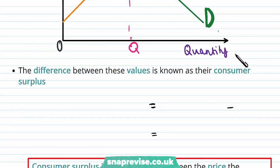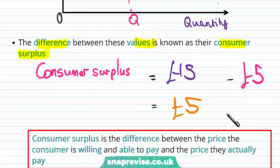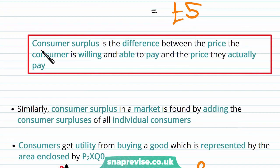So the difference between these values is known as their Consumer Surplus. So Consumer Surplus is the £15 from the maximum and the £5 minimum. So it's the maximum paid versus the equilibrium paid. And therefore our Consumer Surplus is £5. Consumer Surplus is the difference between the price the consumer is willing and able to pay and the price they actually pay.